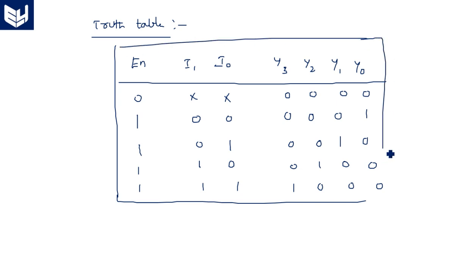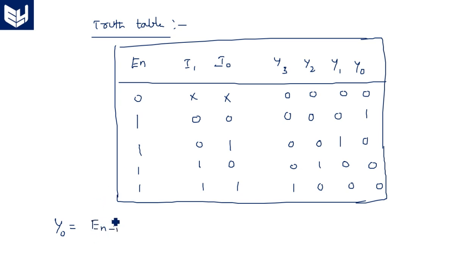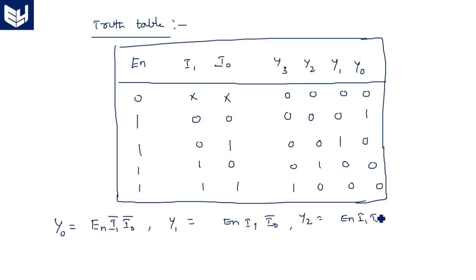The enable pin is used to activate the integrated circuit. Based on the truth table, we can write the Boolean expressions: Y0 = enable · I1_bar · I0_bar; Y1 = enable · I1_bar · I0; Y2 = enable · I1 · I0_bar; Y3 = enable · I1 · I0.